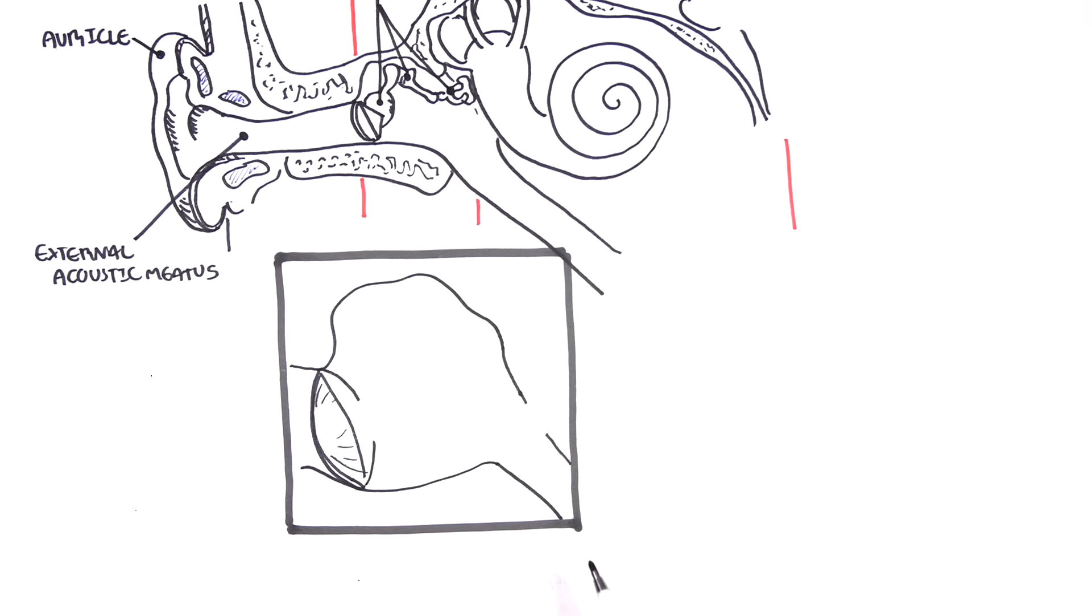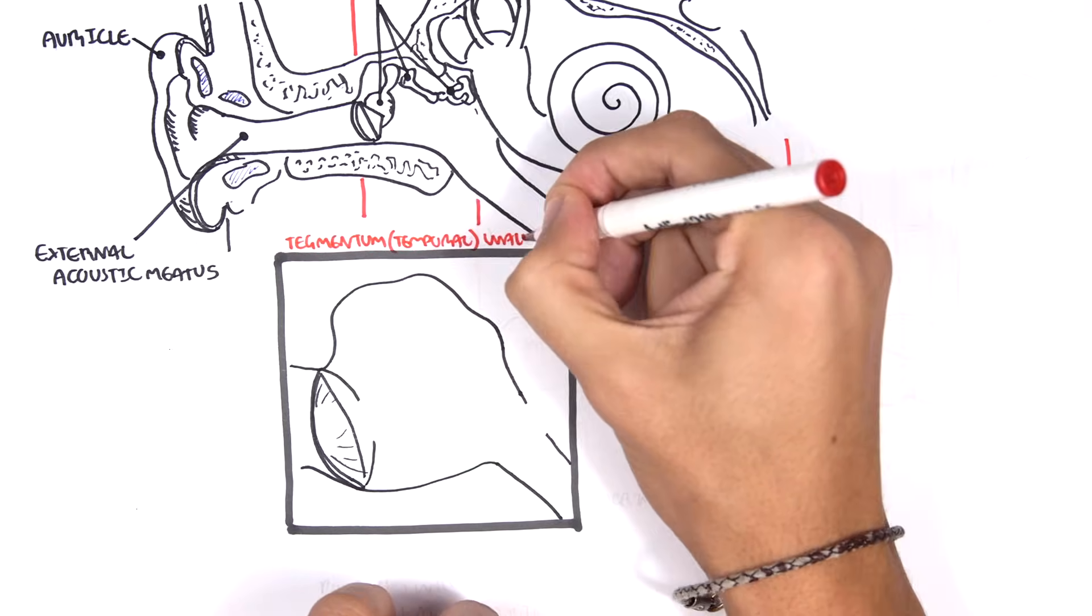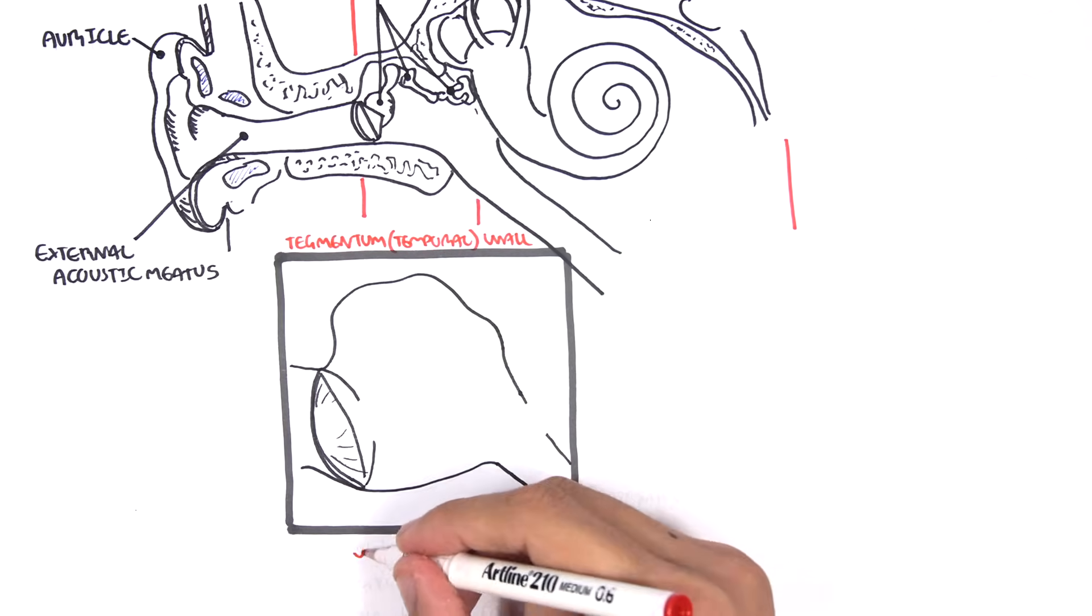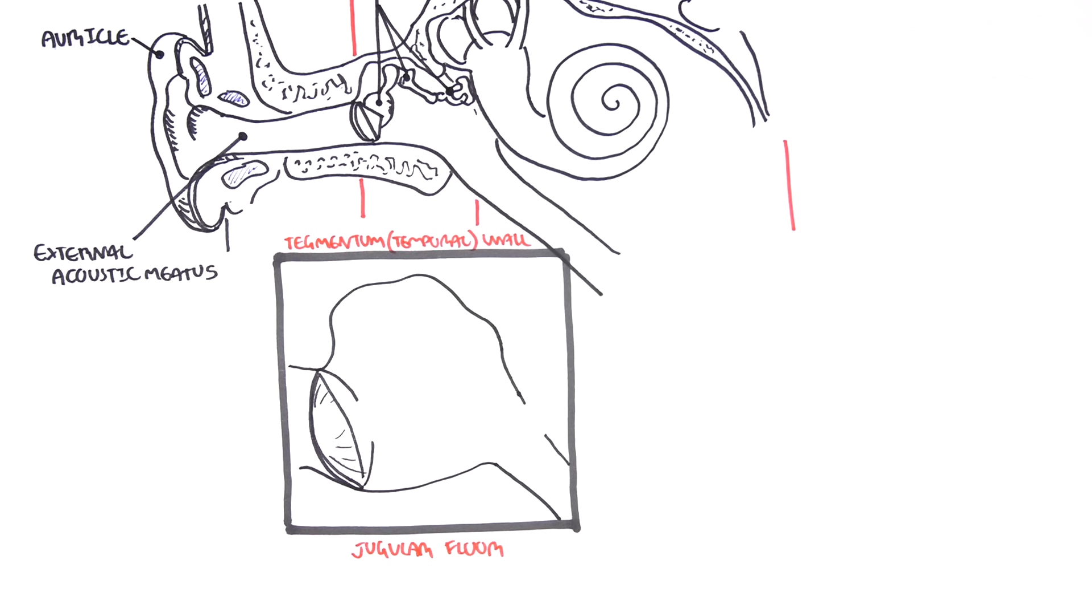The top border is called the tegmental wall which is made up of the temporal bone. The bottom of the middle ear is called the jugular wall or floor because this is where the jugular vein passes.